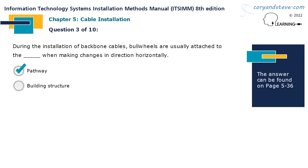During the installation of backbone cables, bull wheels are usually attached to the pathway when making changes in direction horizontally.